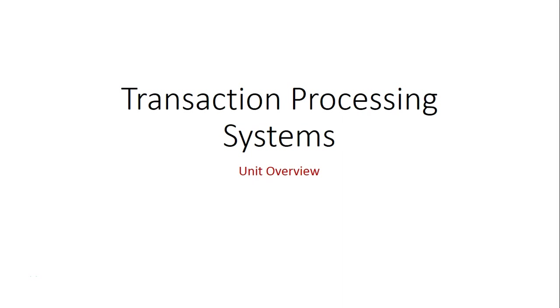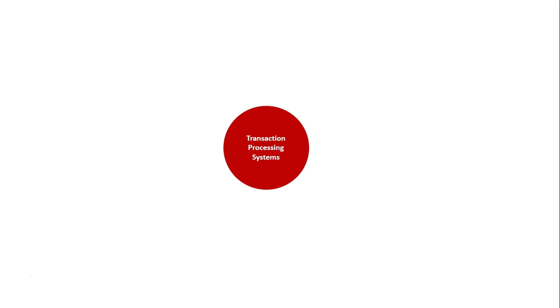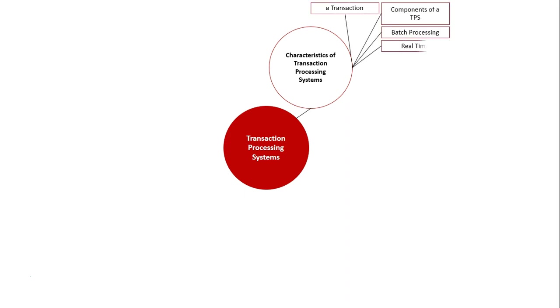This video is a unit overview of the Transaction Processing Systems option topic in the Information Processes and Technology Stage 6 syllabus. The main headings based on the syllabus are: the characteristics of a transaction processing system, what is a transaction, components of transaction processing systems, batch processing, real-time processing, data validation, and the history of transaction processing systems.